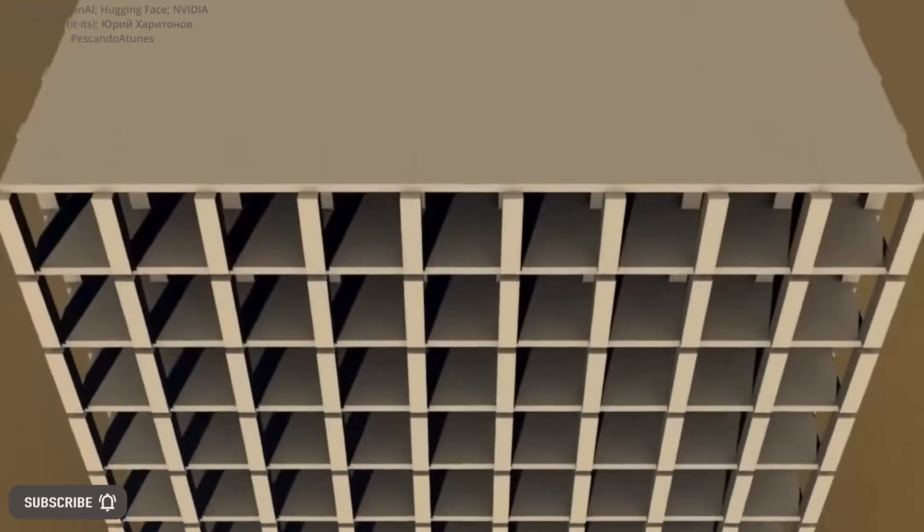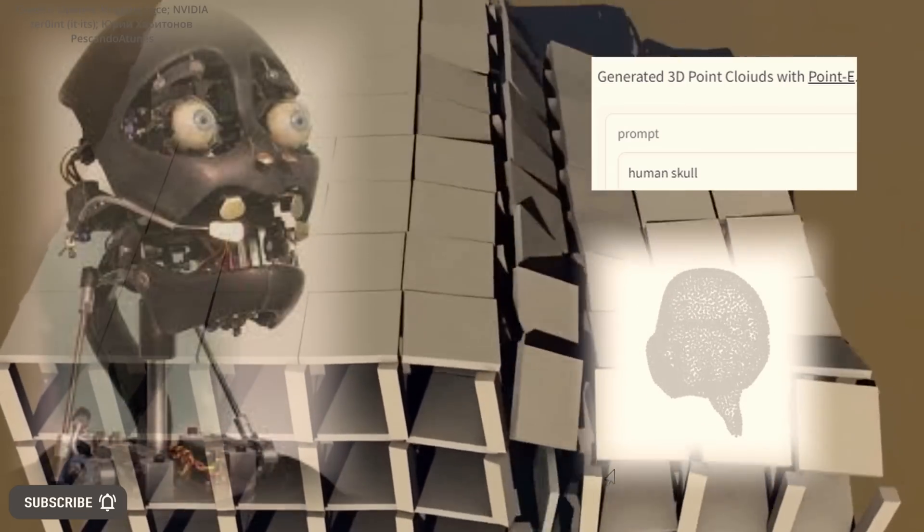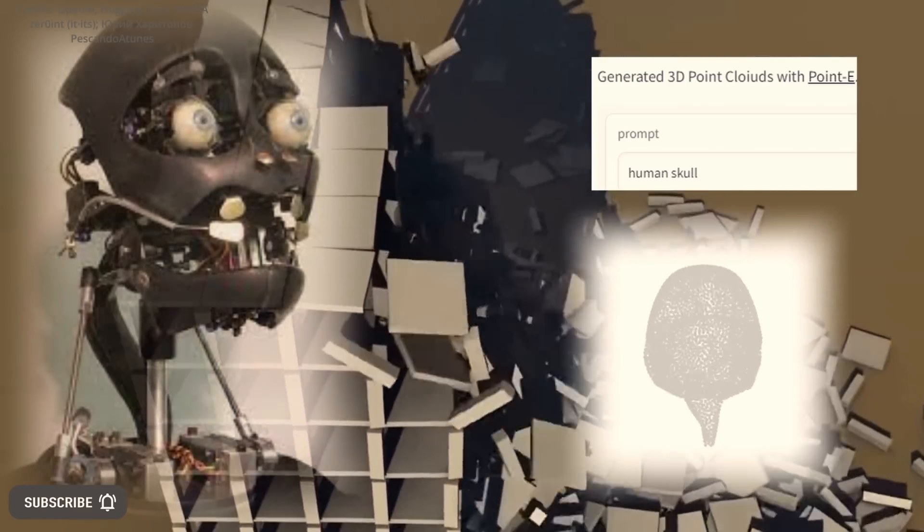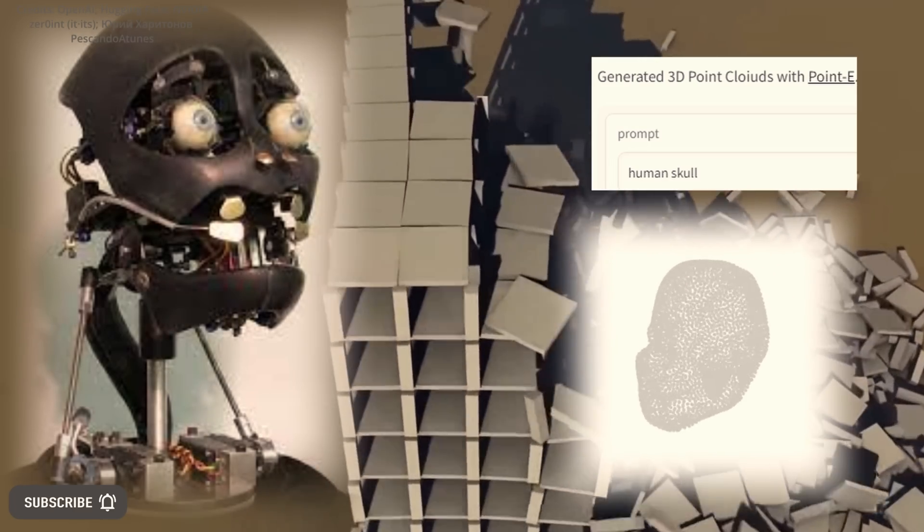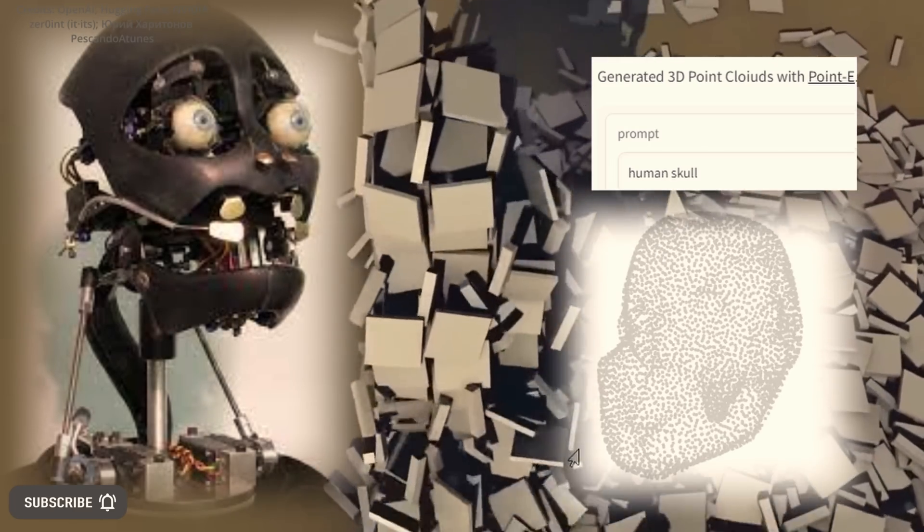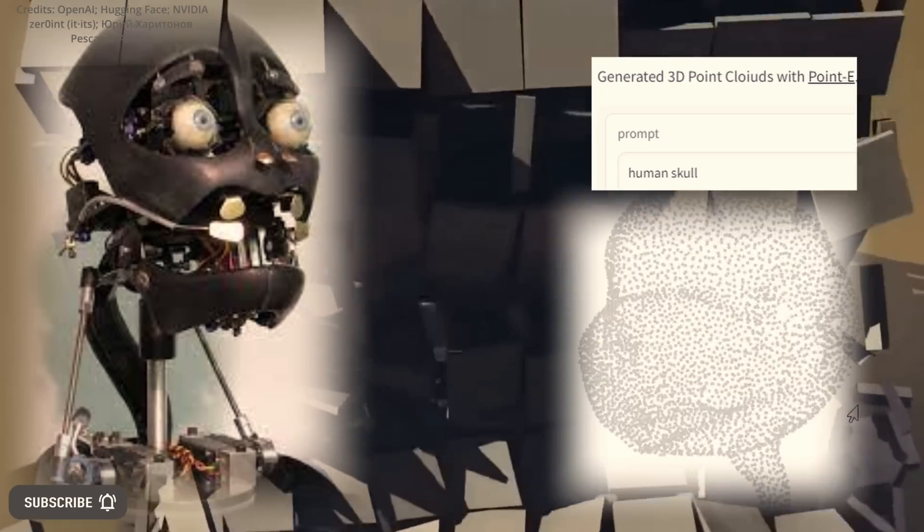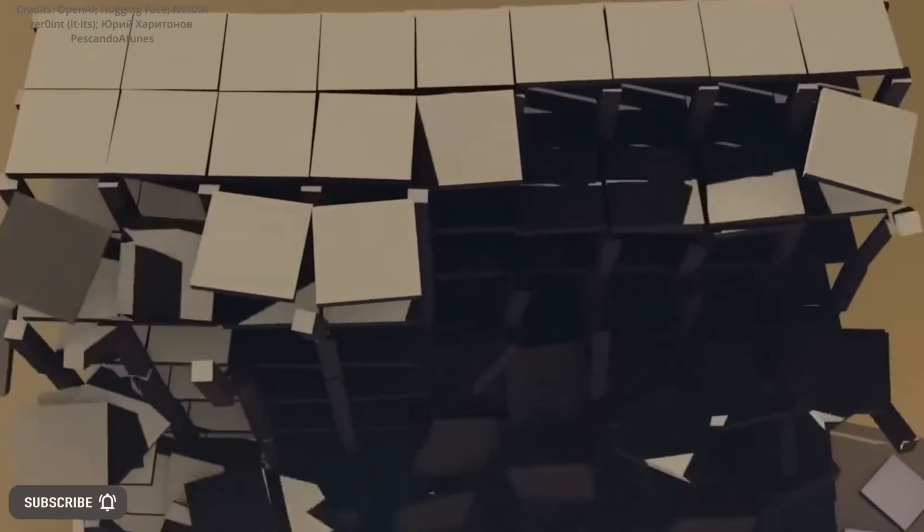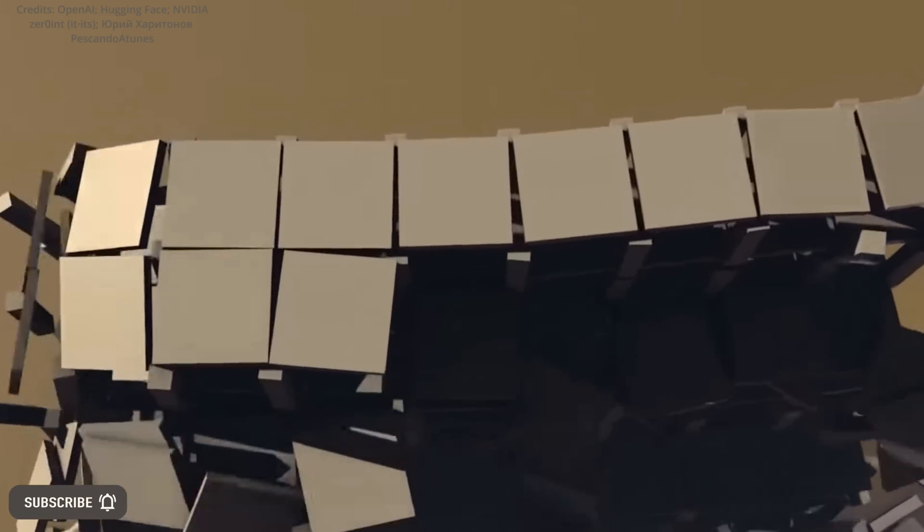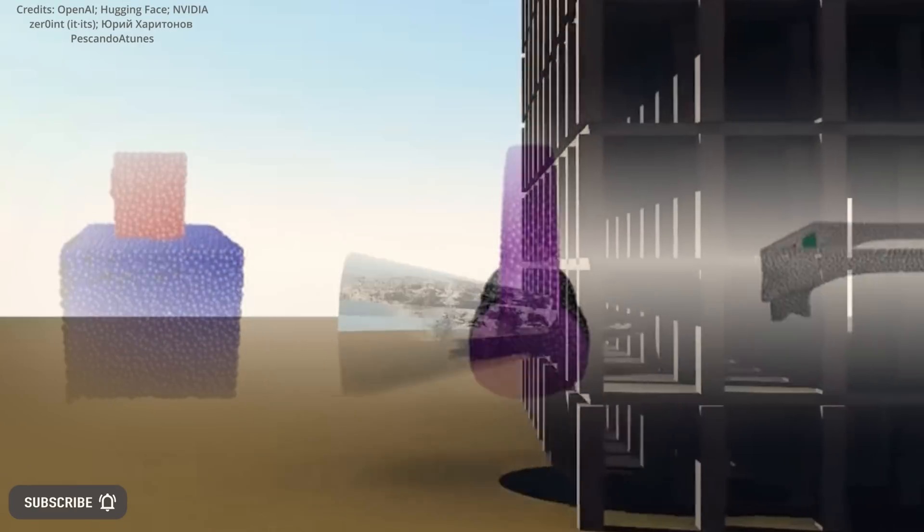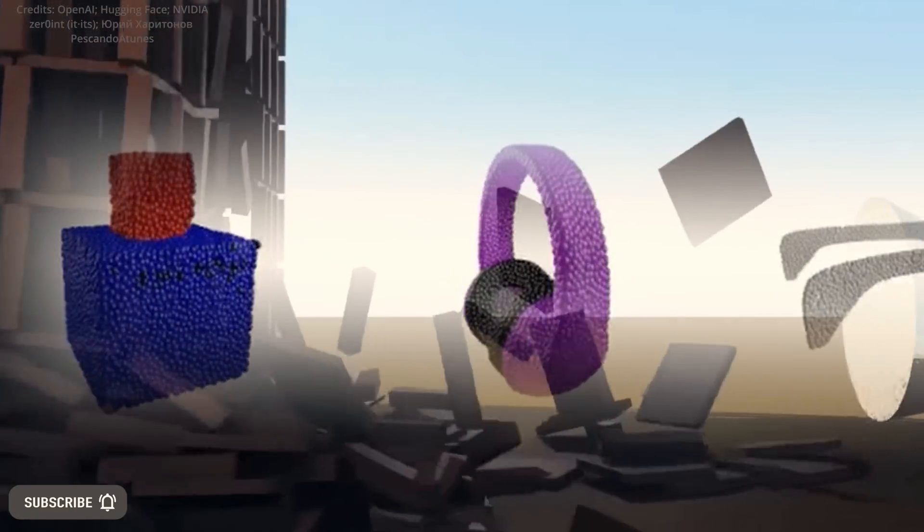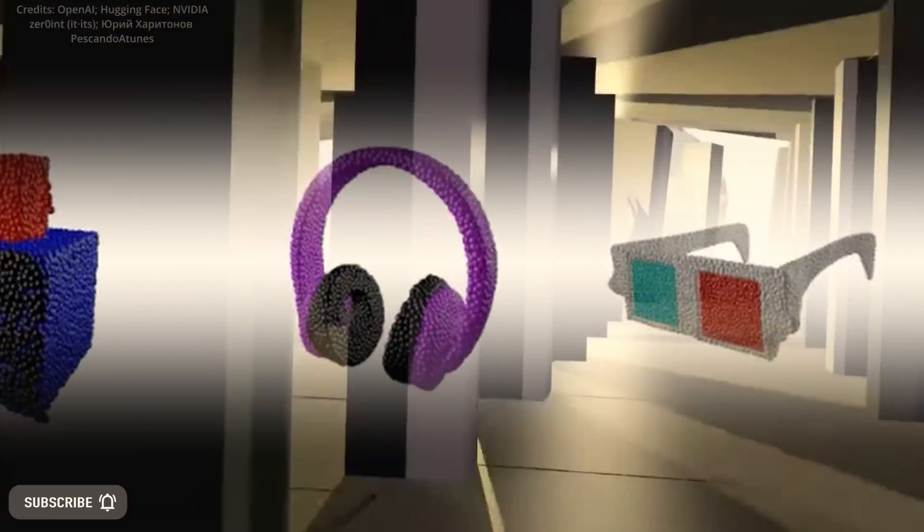The AI community's tendency to train machine learning models using the work of others without obtaining explicit permission has already resulted in a claim of copyright infringement against GitHub Copilot, a service that suggests programming code to developers using OpenAI's codex model. There is a risk that text-to-image models may face similar legal challenges as they become commercialized.